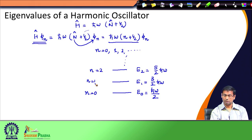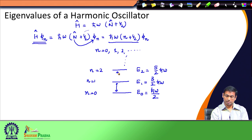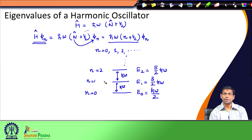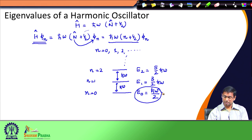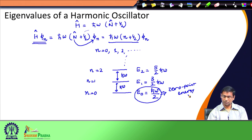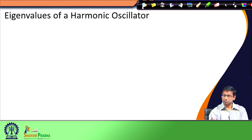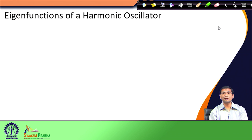The energy levels of the harmonic oscillator are equally spaced, and if you already notice the spacing between two consecutive energy levels is constant — it is always ℏω. Please remember or refresh your memory as to what was the spacing between two consecutive energy levels of the particle in a one-dimensional box problem. The lowest energy ½ℏω is called the zero-point energy.